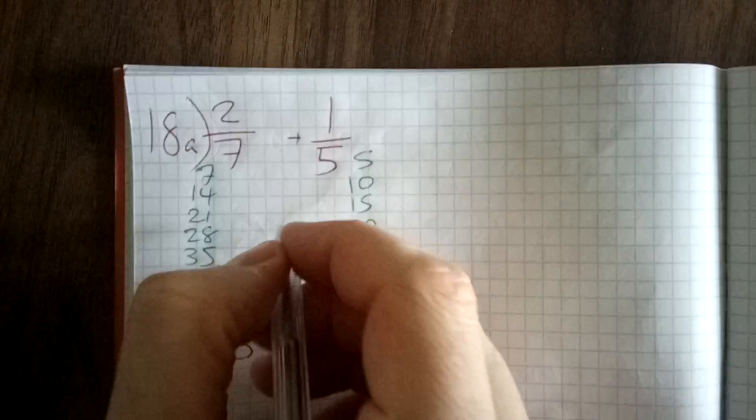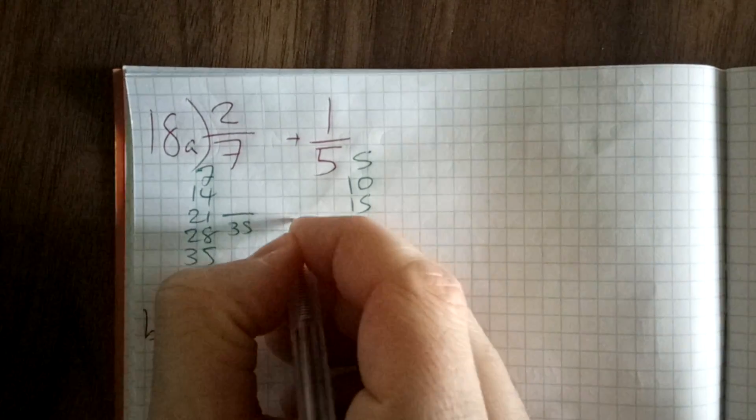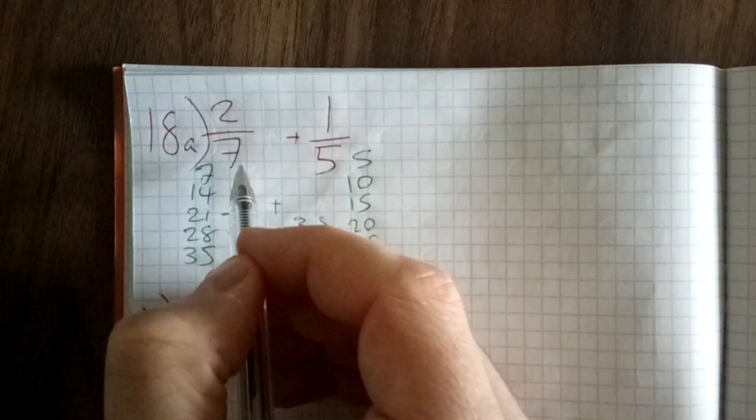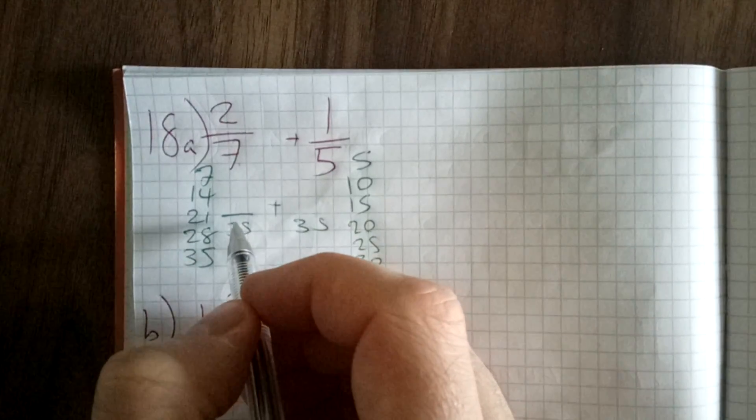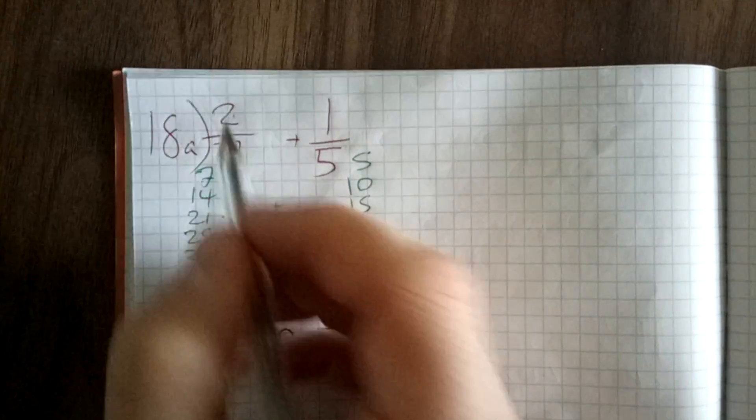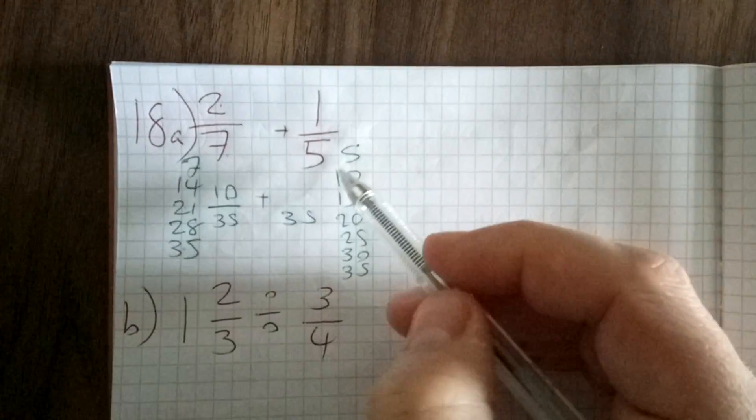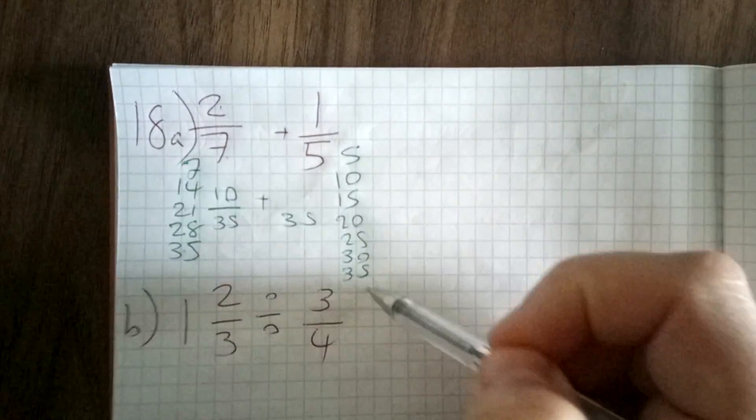So I'm going to rewrite these over 35. To get 2/7 to /35, I times it by 5. Do 1, 2, 3, 4, 5 times 2 by 5 to make it 10. So 2/7 becomes 10/35. To get 1/5 to /35, 5 times 7 is 35.